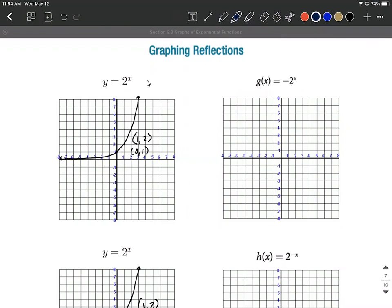To get going on this, what I'm going to do is start with 2 to the x's graph, where we have these key points 0, 1, and 1, 2. When we have this negative, negative always means some sort of reflection. This is a reflection attached to the entire function.